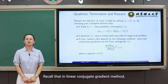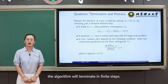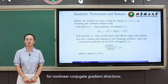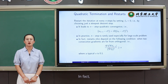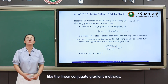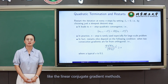Recall that in the linear conjugate gradient method, the algorithm will terminate in finite steps. However, this is not the case for nonlinear conjugate gradient directions. In fact, we wish that the algorithm will converge somehow like the linear conjugate gradient method.